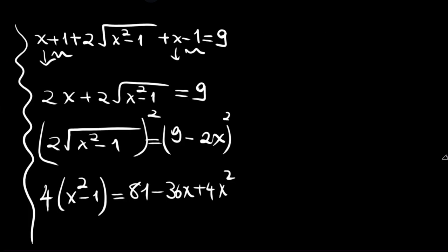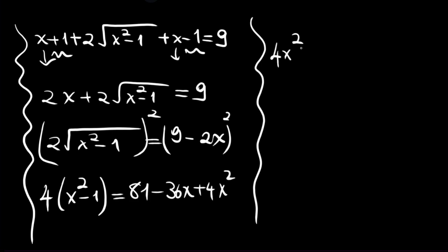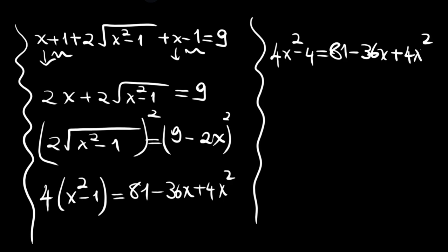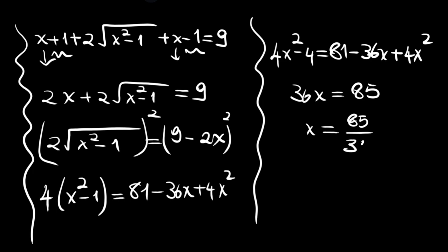So we have 4x squared minus 4 equals 81 minus 36x plus 4x squared. The 4x squared terms cancel. We have 36x equals 85, so x is equal to 85 over 36.